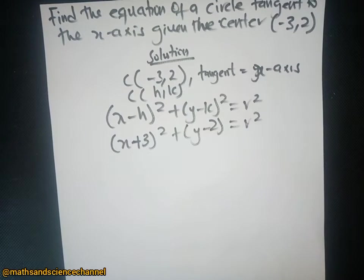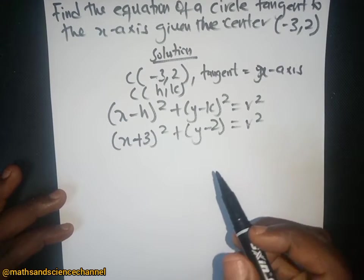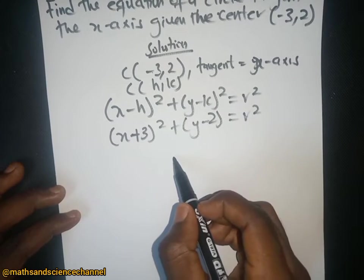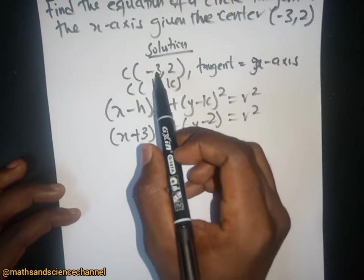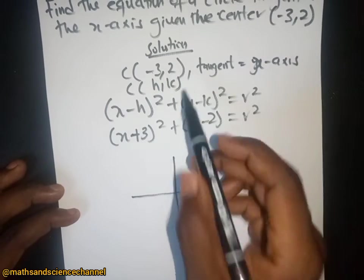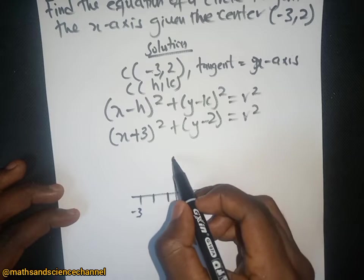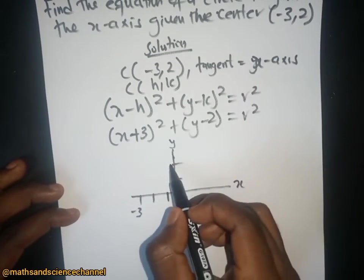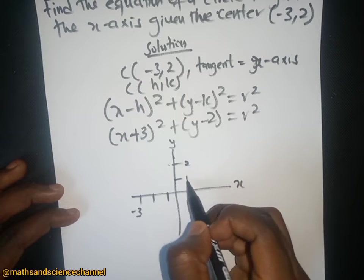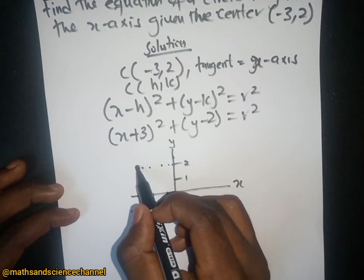In order to find the radius, we have to draw the Cartesian coordinate plane to see what the radius will be. On the Cartesian plane we have x and y. We have the coordinates negative three and two — so negative three on the x-axis and positive two on the y-axis.